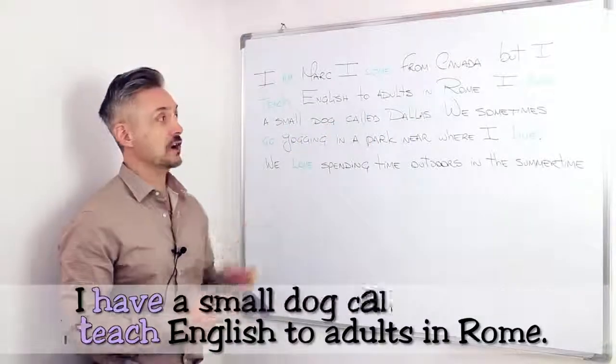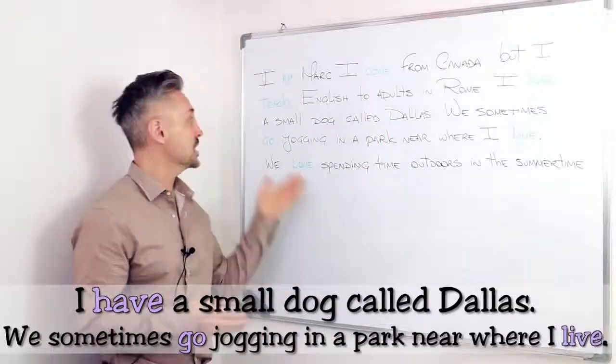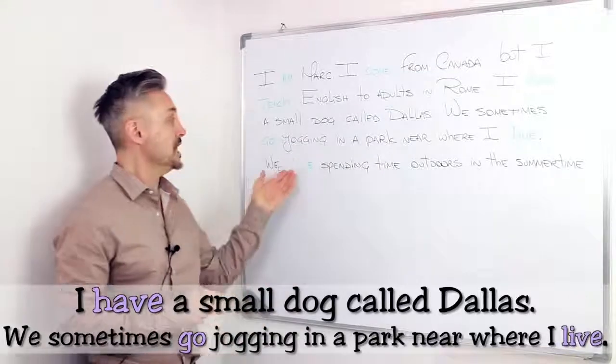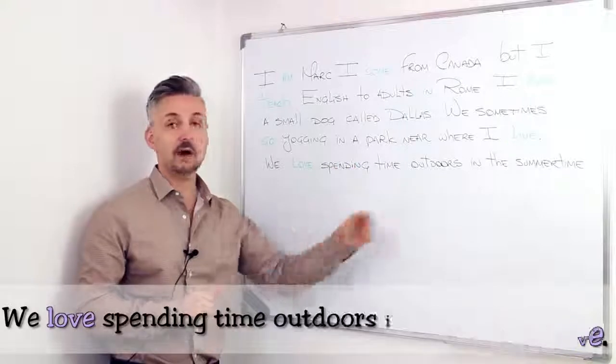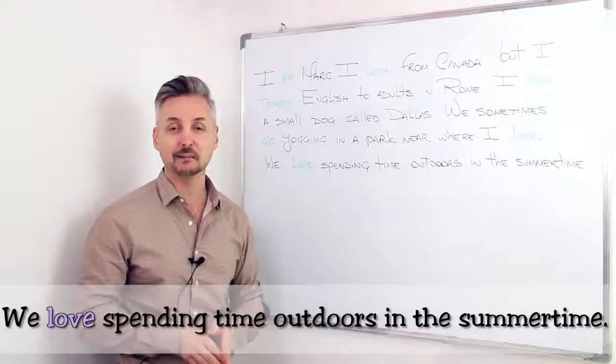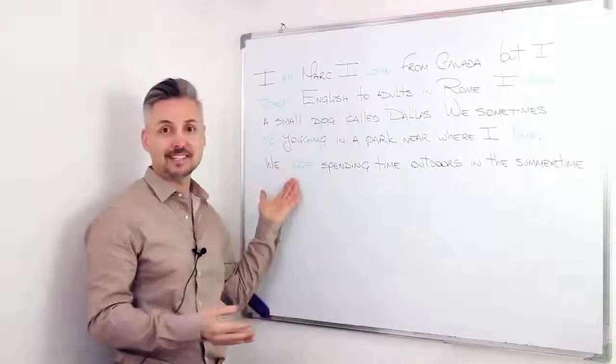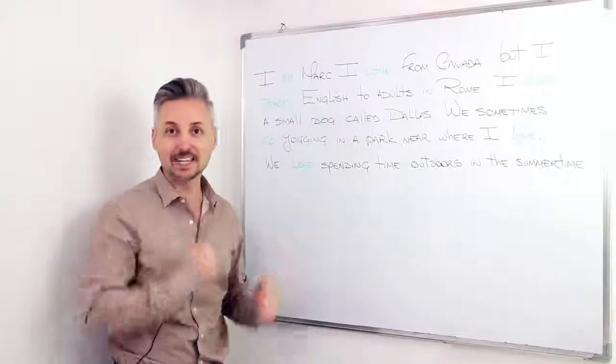I teach English to adults in Rome. I have a small dog called Dallas. We sometimes go jogging in a park near where I live. We love spending time outdoors in the summertime. In this lesson, I'm going to talk about the present simple. So stay tuned.